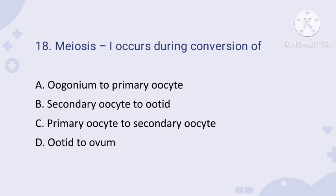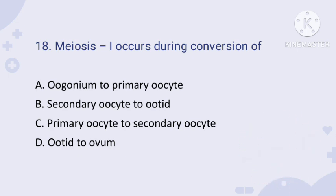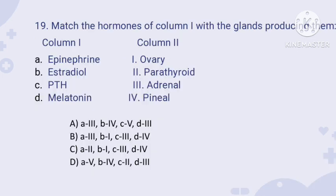Question number eighteen: meiosis I occurs during the conversion of primary oocyte to secondary oocyte — option C is the right answer. Oogonium to primary oocyte involves mitosis. Meiosis I occurs when the primary oocyte undergoes meiosis I and is converted into the secondary oocyte. The secondary oocyte then undergoes meiosis II and gives the ootid or ovum.